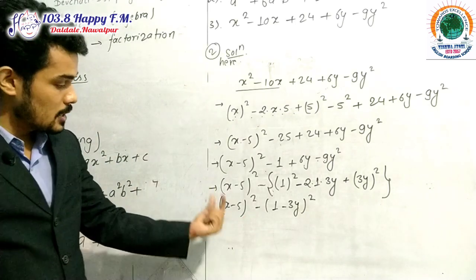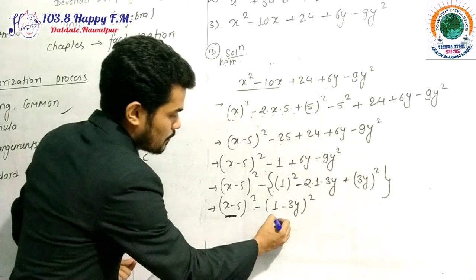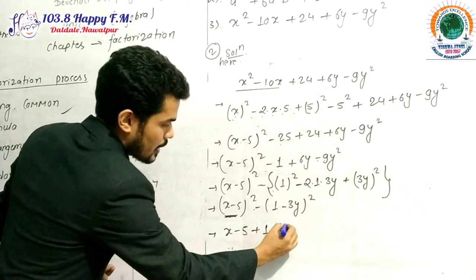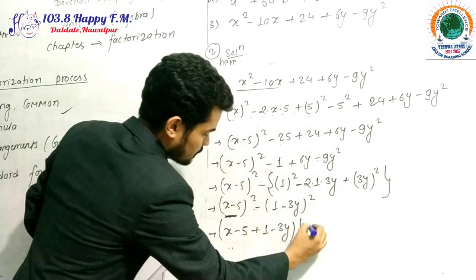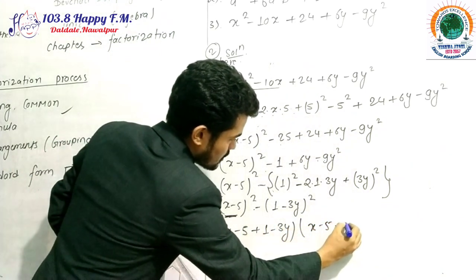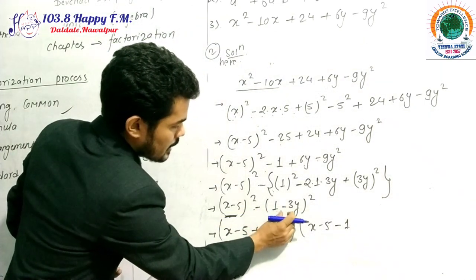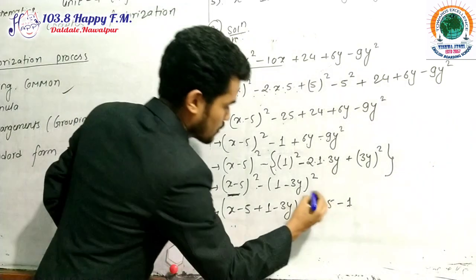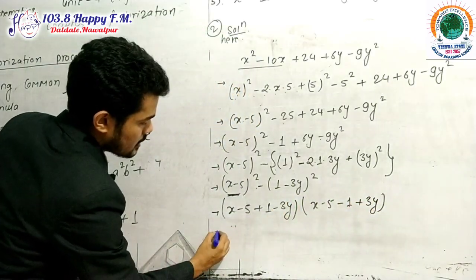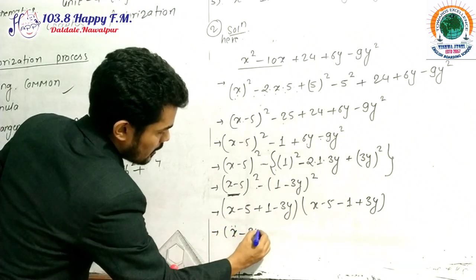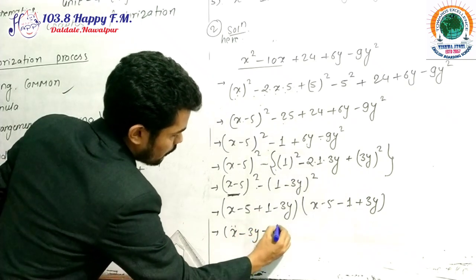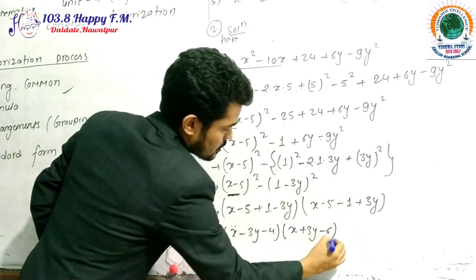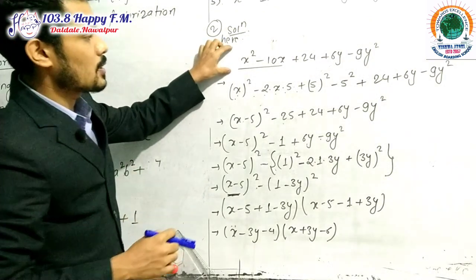This is in the form A² − B², so using the formula A² − B² = (A + B)(A − B), where A = (x − 5) and B = (1 − 3y), we get [(x − 5) + (1 − 3y)][(x − 5) − (1 − 3y)]. Arranging the like terms: the first bracket gives x − 3y − 4, and the second bracket gives x + 3y − 6. This is how we do the factorization of this kind of expression involving different variables in the same expression.